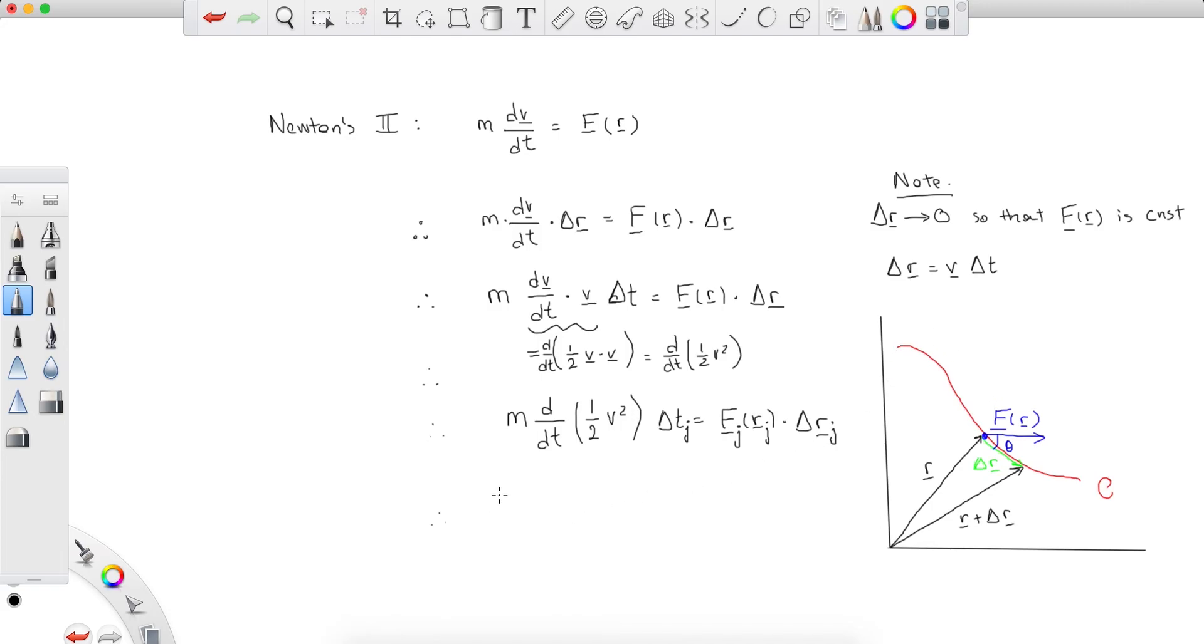So essentially, we're going to take the sum of all of these contributions and we're going to take the limit as delta rj approaches 0. So we're going to take the integral of these. So we have the integral of m d/dt 1/2 v squared dt equals the integral of F of r times dr.